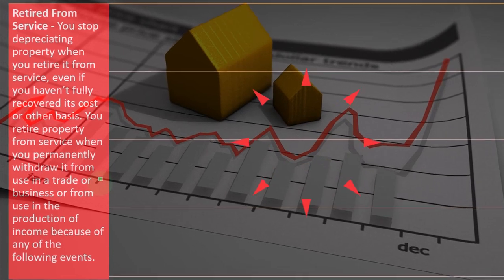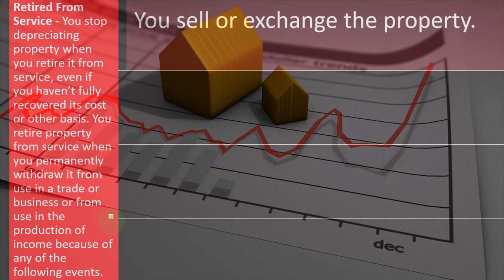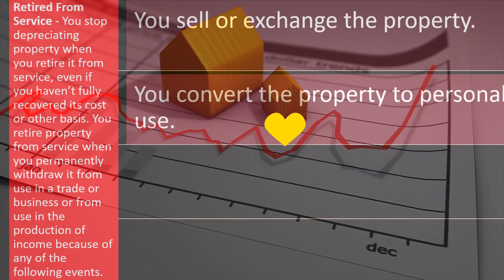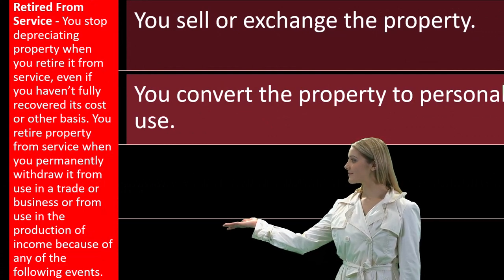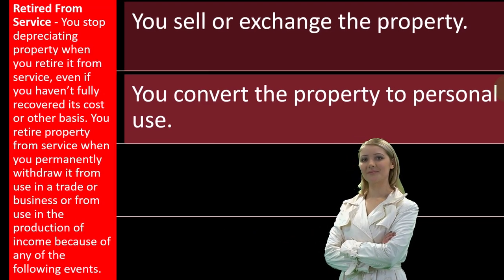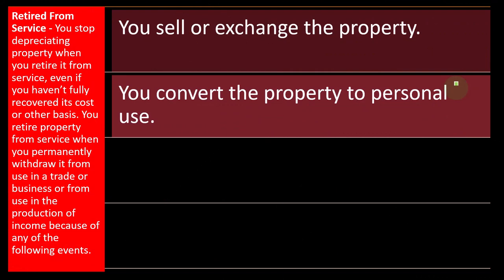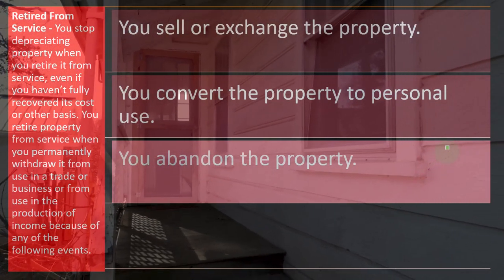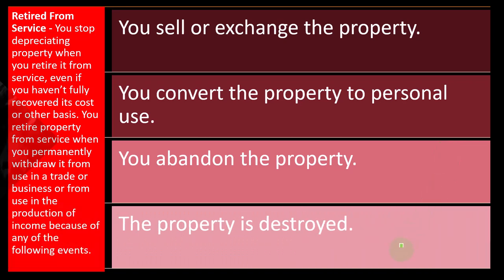You retire property from service when you permanently withdraw it from use in a trade or business because of: selling or exchanging the property (probably the most common scenario), converting the property to personal use (such as moving into a former rental), abandoning the property (which happened a lot during the housing loan bubble when the loan was greater than the value of the homes), or the property being destroyed.